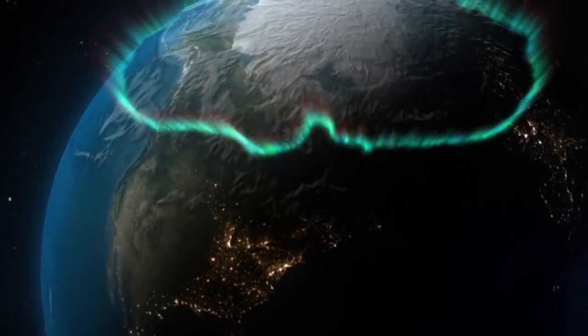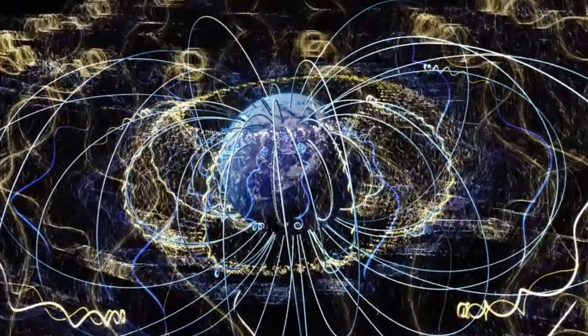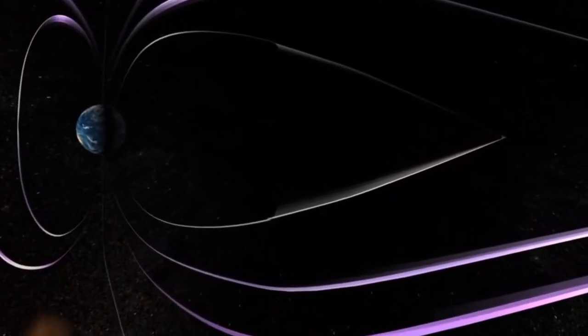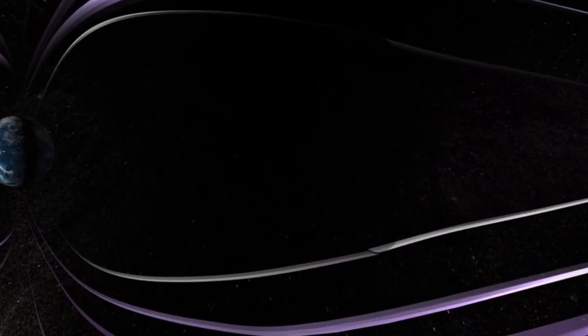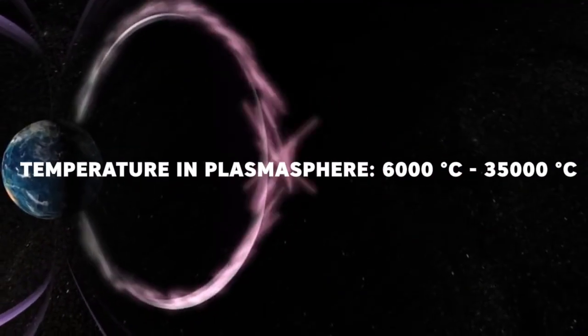Not far up in the space, inside the magnetosphere of the earth, there is a donut-shaped region, that is, plasma sphere. And it's about 1000 kilometers from the earth's surface. The temperature in the plasma sphere is generally between 6000 and 35000 degrees celsius. This is even hotter than the core of the earth.